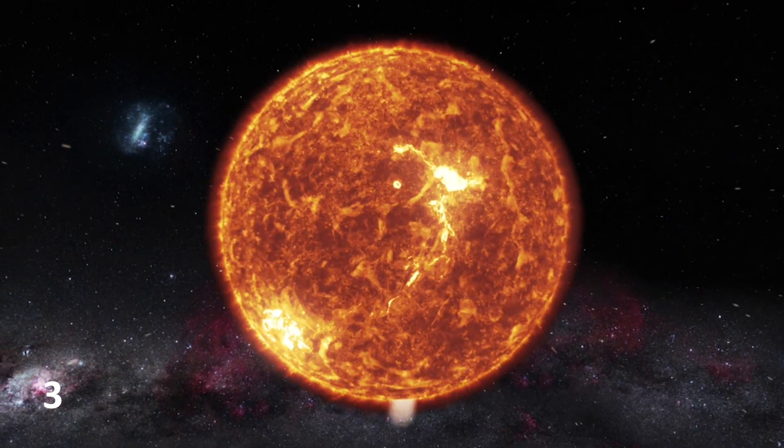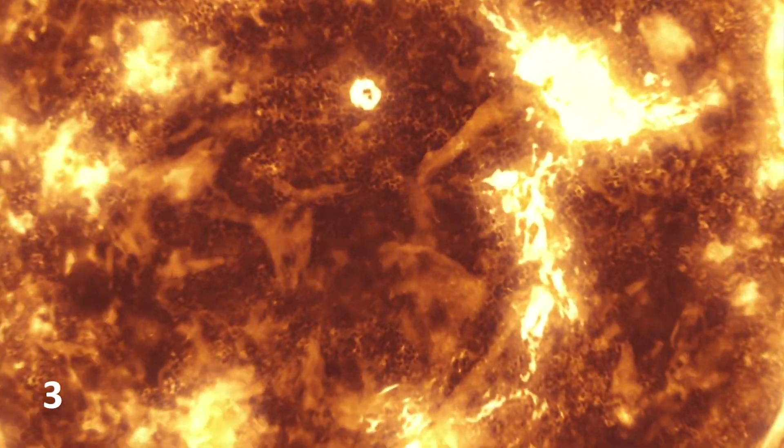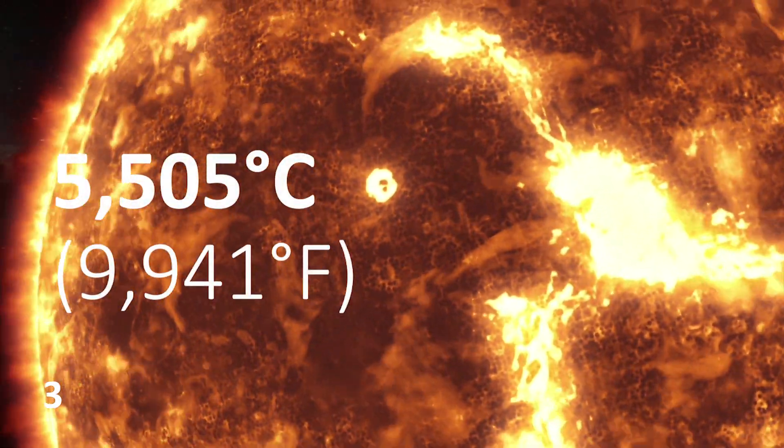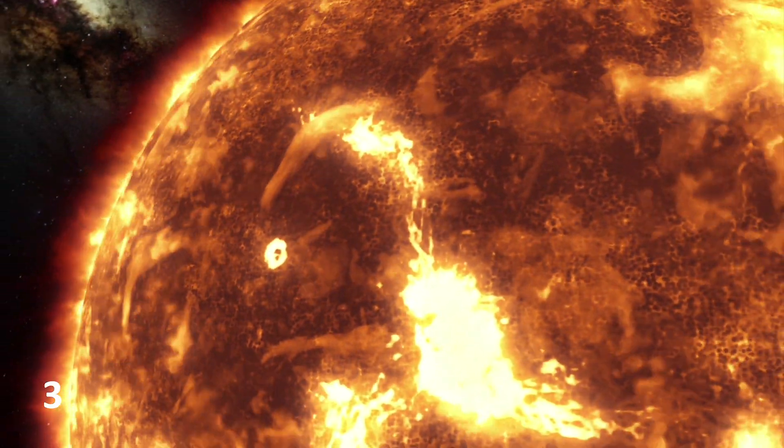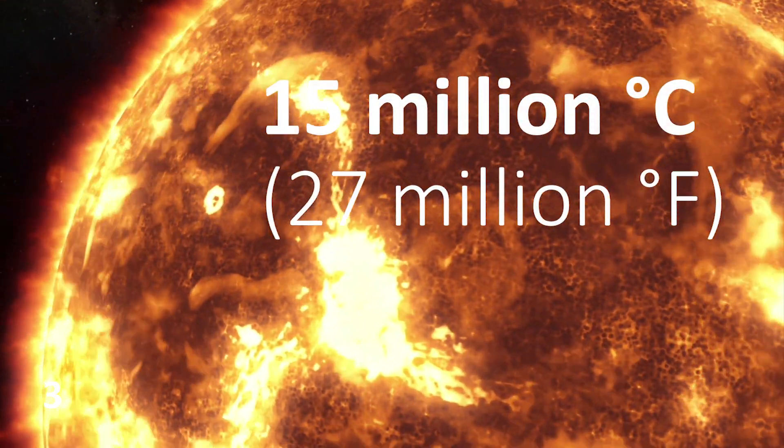The Sun is the hottest object in the solar system. Its surface temperature is 5,505 degrees Celsius, while its core could be as high as 15 million degrees Celsius.